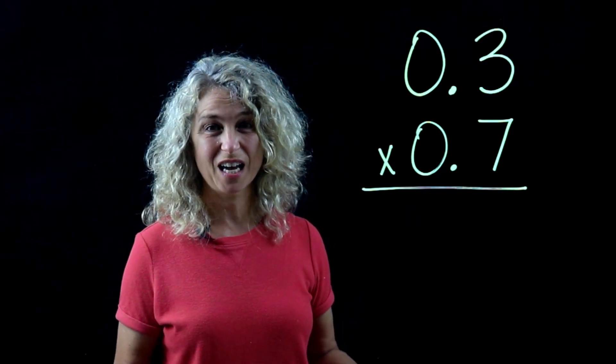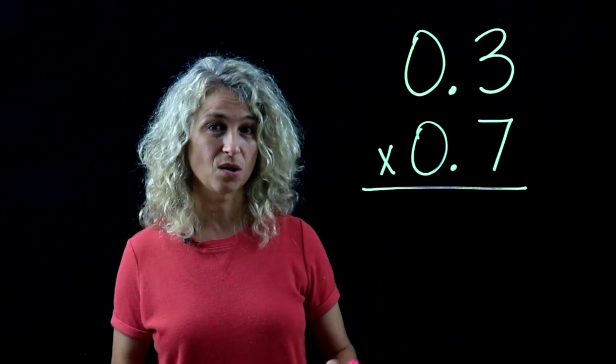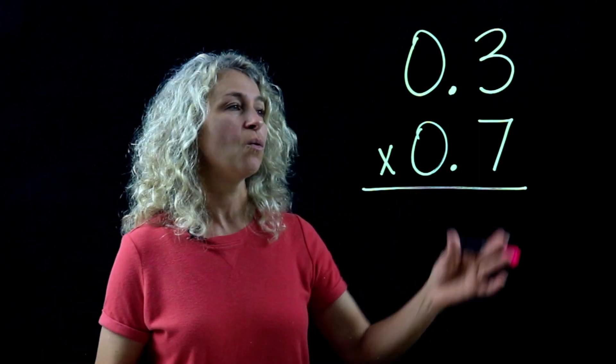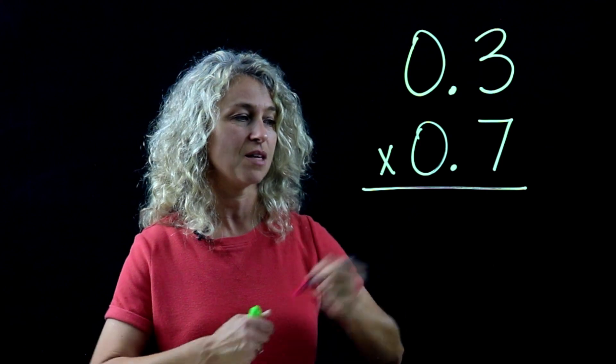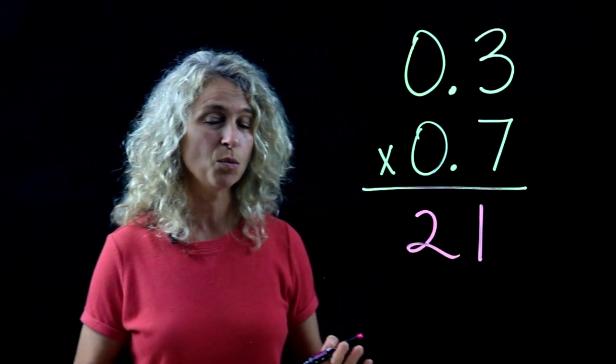Hi, in this video today we're going to learn about multiplying decimal numbers with zeros in the product. This is a pretty simple skill. We're multiplying 7 times 3. 7 times 3 is 21, so the decimal placement though is key.